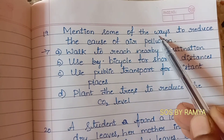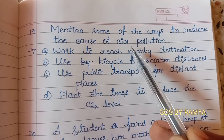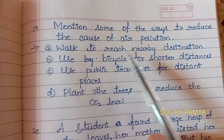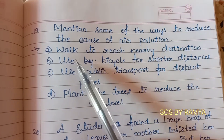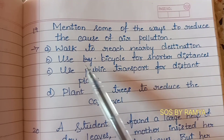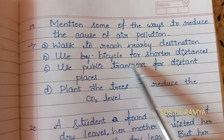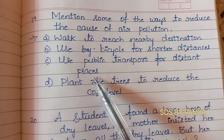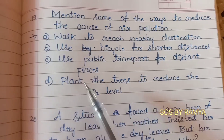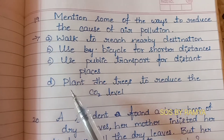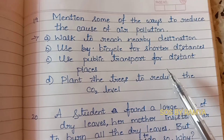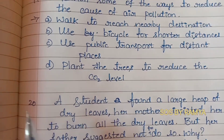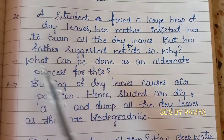Question 19: Mention some of the ways to reduce the cause of air pollution. You can walk to reach nearby destinations. You can use a bicycle for shorter distances. You can use public transport for distant places. You should also plant saplings and trees, which will reduce the carbon dioxide level in the atmosphere.